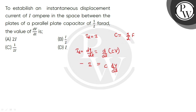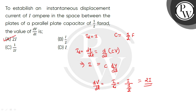The displacement current is i, so i equals C times dv/dt. Therefore, dv/dt equals i divided by C. The value of C is half (0.5 Farad), so dv/dt equals 2 times i. The correct answer is option A: dv/dt equals 2i. I hope you understand, thank you so much.